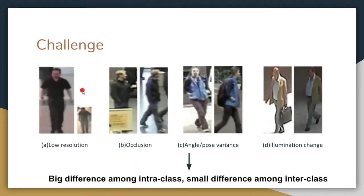There are several challenges of person re-identification, for example: low resolution, occlusion, angle and pose variance, and illumination change. In conclusion, there is a big difference among intra-class samples and a small difference among inter-class samples.